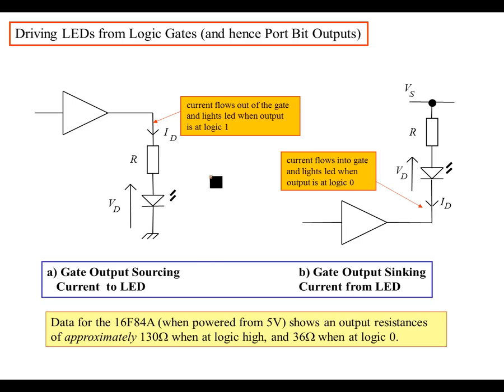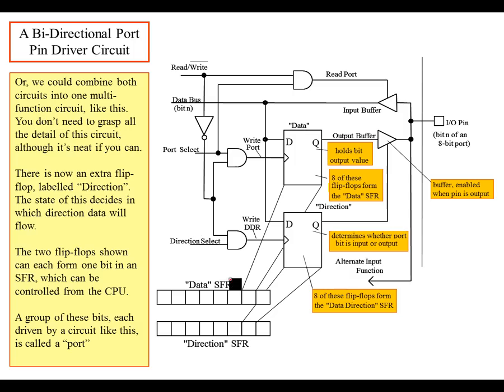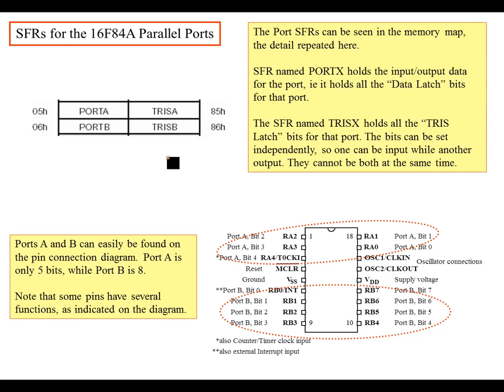We talked about before about there being some data registers, some data special function registers and a direction special function register. Specifically we're going to label those as being the port A and the port B and the TRIS A and the TRIS B. The special function register port A is the data and the port B is the data for the B port. You address these through 05 hex and 06 hex. To get to the direction registers, you go 85 hex and 86 hex. You set these either through ones or zeros to set the direction either inputs or outputs.